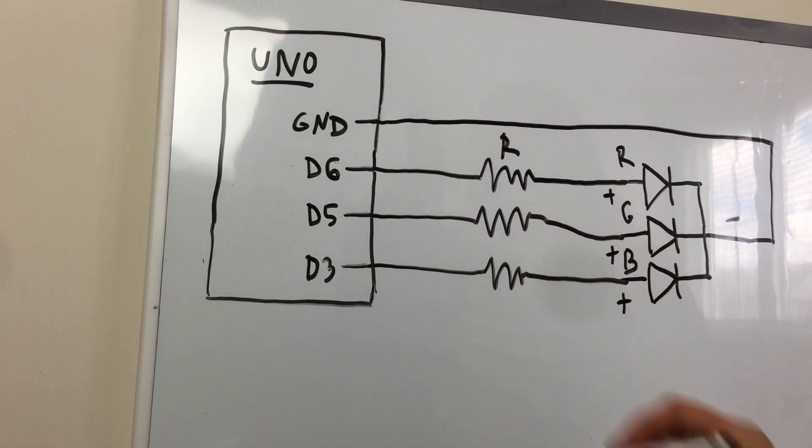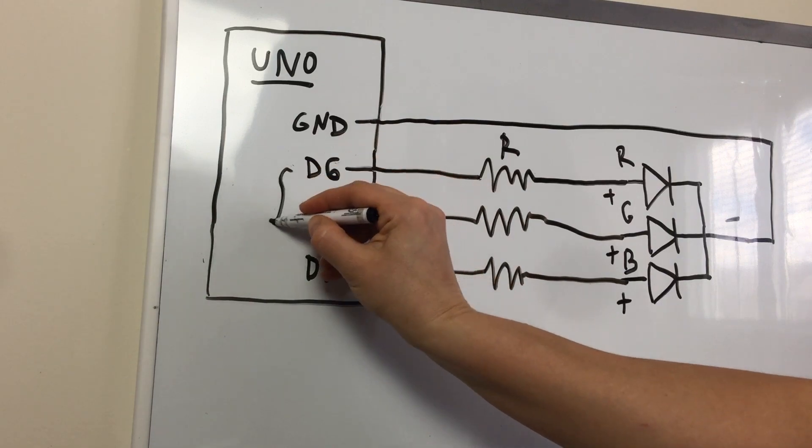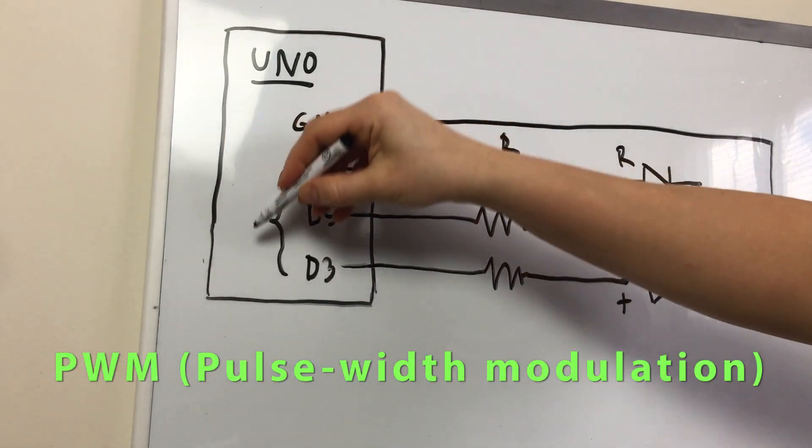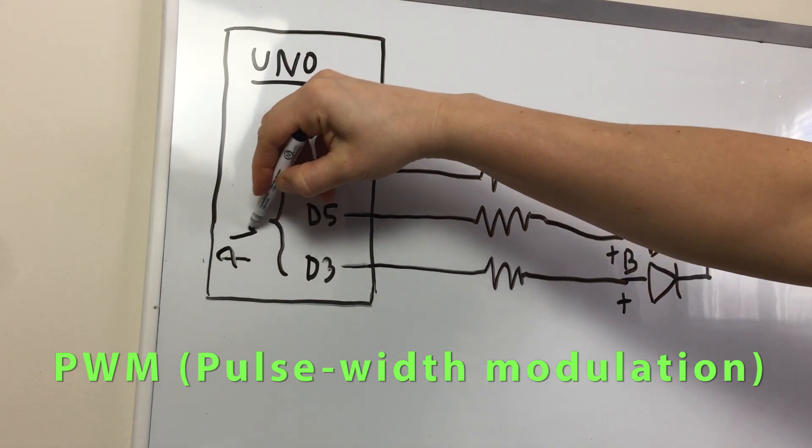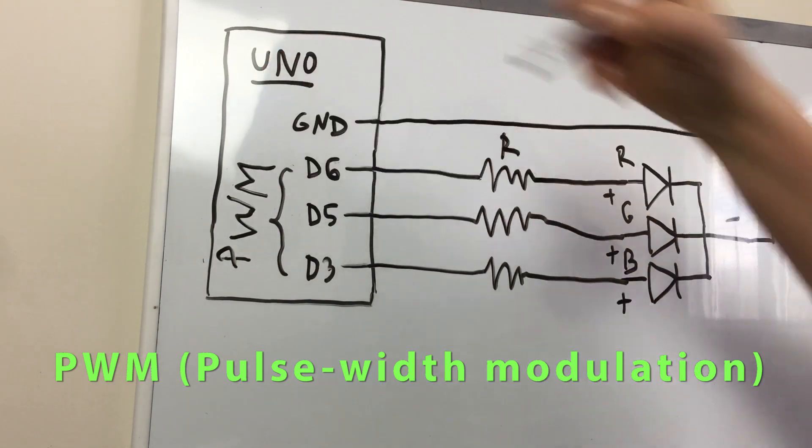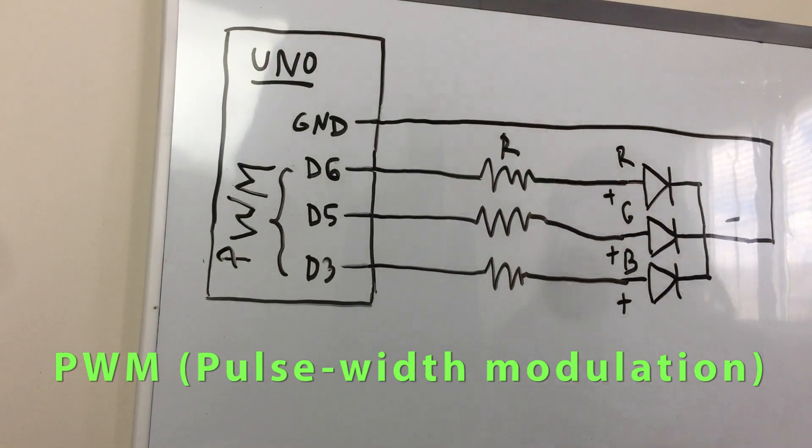There are special PWM pins on the UNO. PWM stands for Pulse Width Modulation. It is a technique for controlling power and therefore the brightness of each of the LEDs.